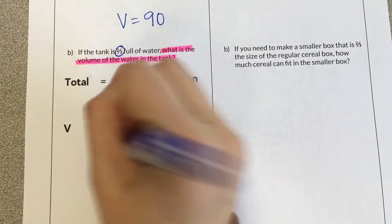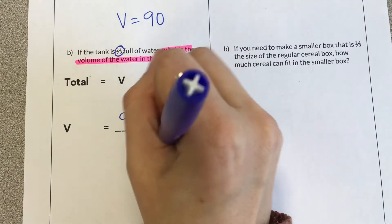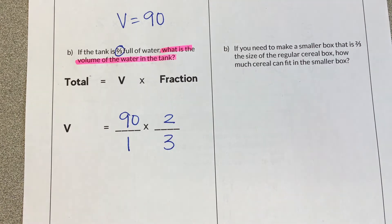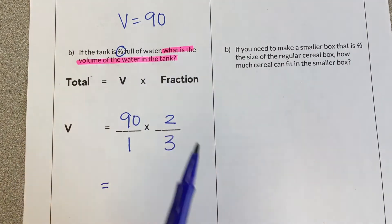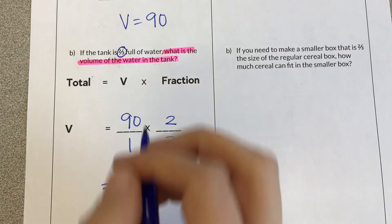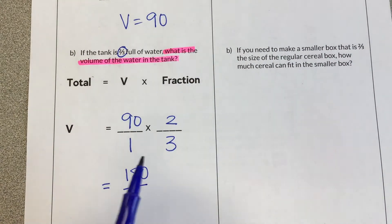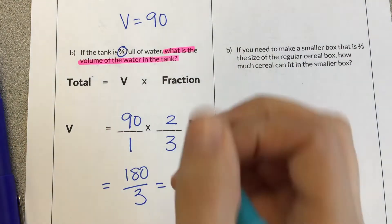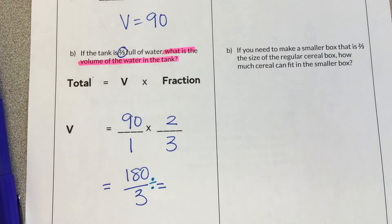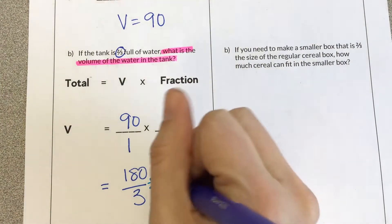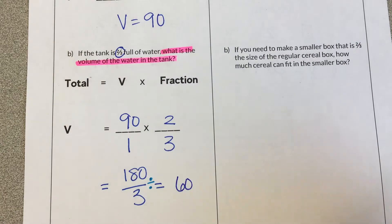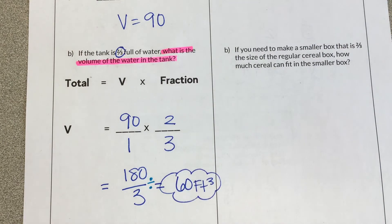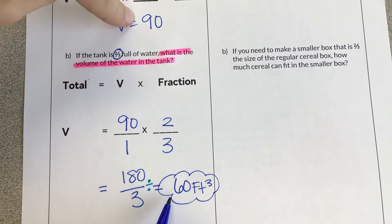So 90 over 1 times our fraction of 2 over 3. Since these are big numbers, I am just going to multiply across right away. So on the top, 90 times 2 is 180. On the bottom, 1 times 3 is 3. Remembering that a fraction bar means division. So I am doing 180 divided by 3, which is 60. Our units are feet. So 60 feet cubed. Should be less than the original because it's not completely full.